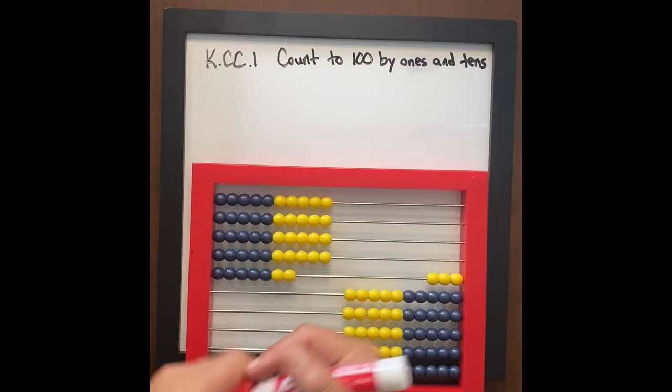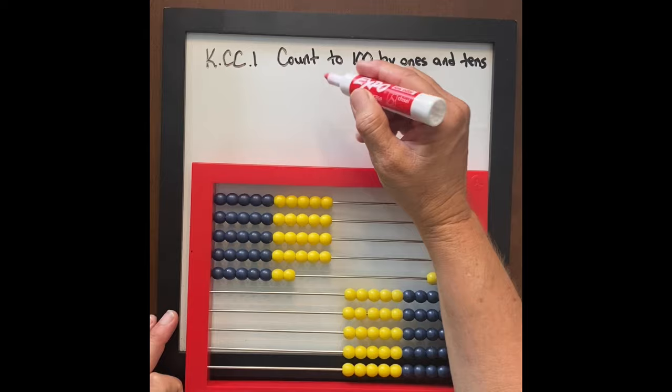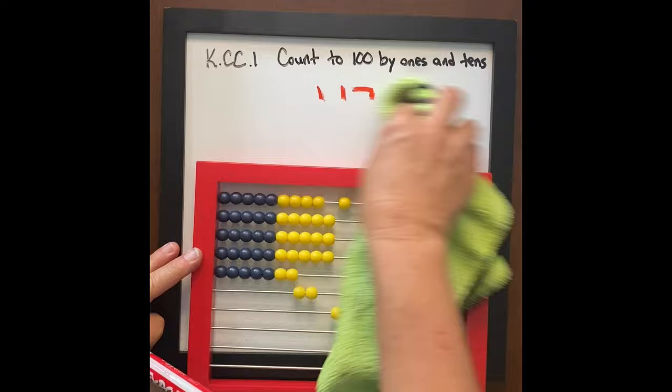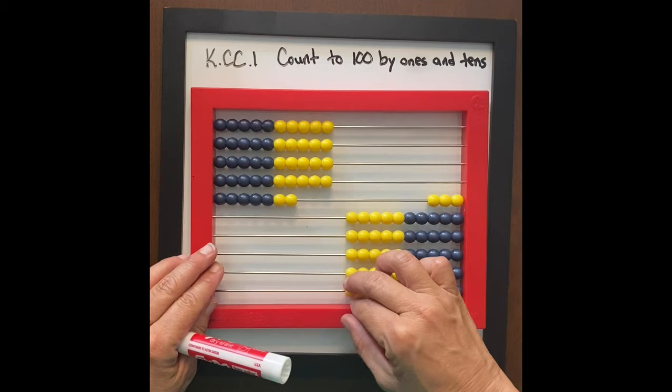They'll say 47. And if they don't, I will say let's write 4, 10, 7. Or even if they do say 47, let's write 4, 10, 7. Everyone says it out loud together: 4, 10, 7. Great. 4, 10, 7 means 47.